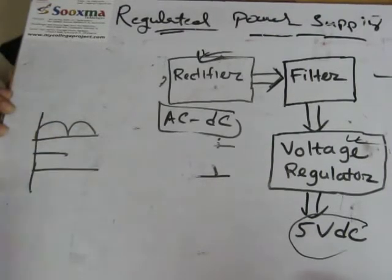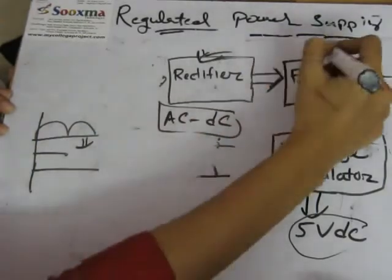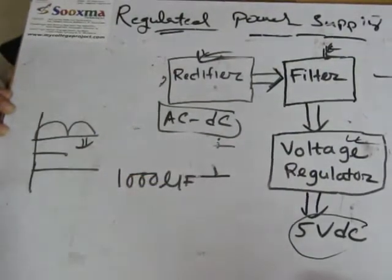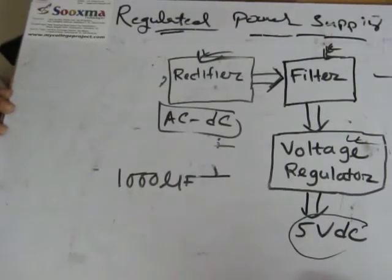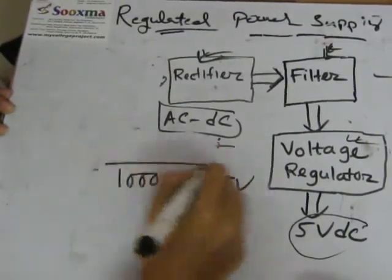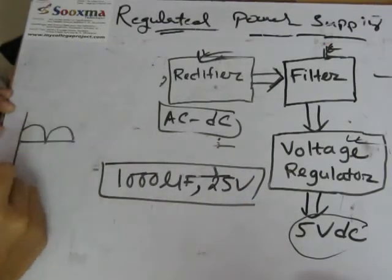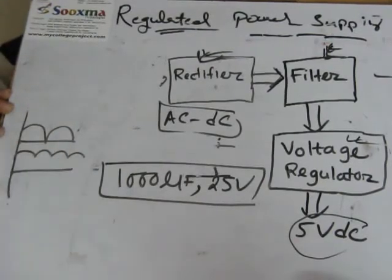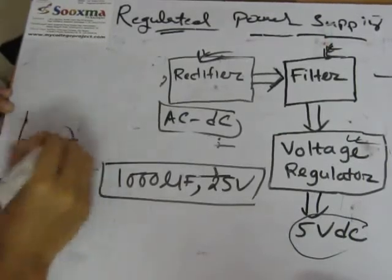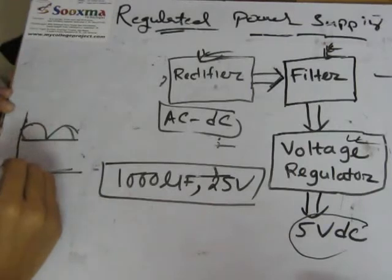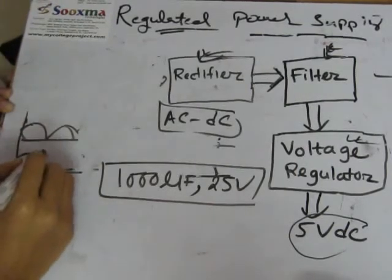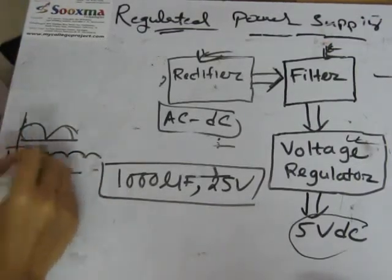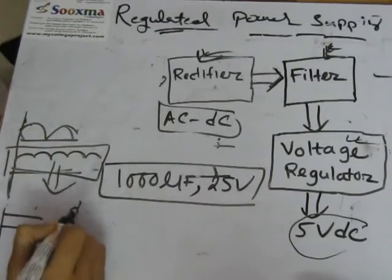Our desired output is a smooth DC. To get that desired output we are using a filter. In place of a filter we are going to use a 1000 microfarad capacitor, and the voltage rating should be 25 volts. The capacitor will convert the pulsating input into a smoother waveform because of its charging and discharging property. It will charge and discharge repeatedly, and finally we will get a waveform that, though not a perfect straight line, is close to a perfect DC voltage output.